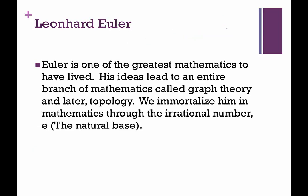A little bit about, so I said we were using Euler diagrams, well what is Euler? Euler is named after Leonard Euler. He's one of the greatest mathematicians to have ever lived. He was alive in the 18th century. His ideas led to an entire branch of mathematics called graph theory and then later topology. We immortalize him in mathematics through the irrational base E. So if you're familiar with the natural base E, it's a very rare irrational number because normally irrational numbers either have like a symbol involved like the square root of two, or they're a Greek letter. But this is a rare one because it's actually a standard English letter, the letter E, and it's the natural base named after Euler.